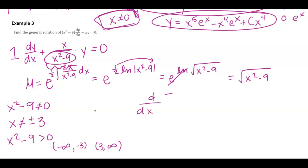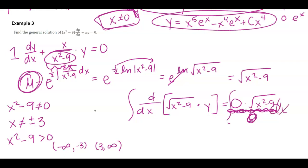So that means that the derivative of square root of x squared minus 9 times y must be equal to 0. Don't forget, just because we kind of shortcut to this, you are still multiplying by the mu, but just this piece right here is 0. So then I integrate both sides with respect to x. And I get this piece here times y is equal to some constant. And so y must be that constant over this piece. And then again, if I wanted to find a specific solution, I would only be able to find it on these two intervals.